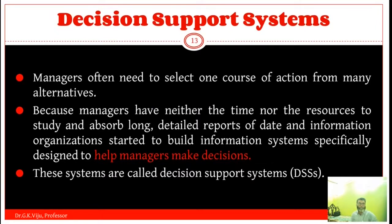Managers often need to select one course of action from many alternatives. Because managers have neither the time nor the resources to study long detailed reports of data and information, organizations started to build information systems specifically designed to help managers make decisions — these are called decision support systems. A decision support system is a computerized system used to support determinations, judgments and course of action in an organization or a business. A DSS sifts through and analyzes massive amounts of data, compiling comprehensive information that can be used to solve problems and in decision making.